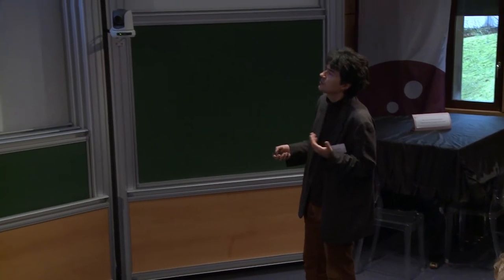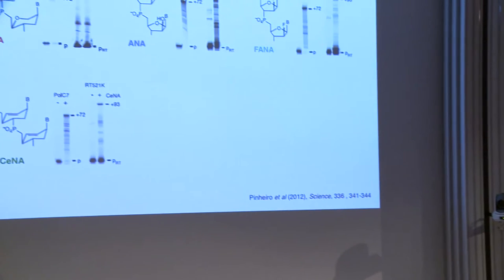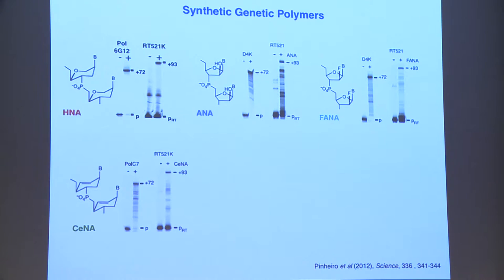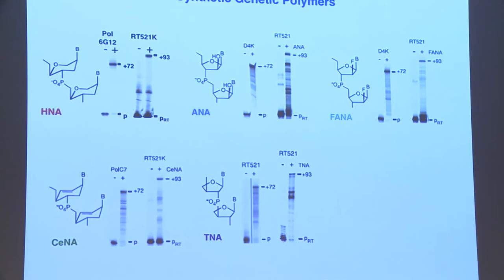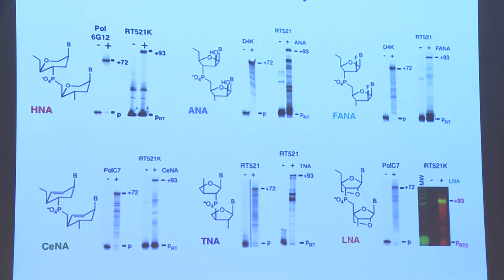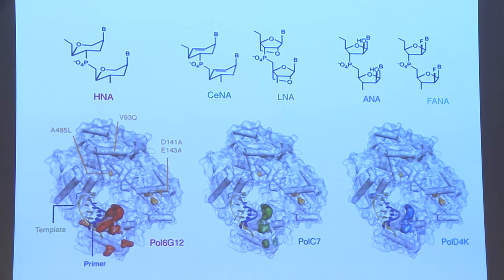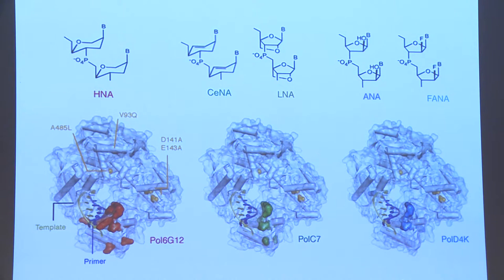Once we figured out how to do it with HNA, we very quickly figured out how to do it with CNA. ANA and FANA are based on arabinofuranose rings rather than ribofuranose rings. TNA is an interesting case, based on a tetrose rather than a pentose, and some of you may have encountered the interlocked rings of LNA, which are important in biotechnology. Different polymerases are needed for different XNAs, but they all share mutations in the so-called thumb domain of the polymerase.